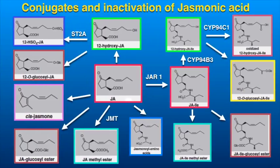Free jasmonic acid in the cytoplasm is conjugated to amino acids or glucose. An enzyme JAR1 was identified using JA-resistant mutants, which is responsible for forming JA-isoleucine conjugates. It was subsequently seen that the JA-isoleucine conjugate is the main signaling form of JA which binds to JA receptors. Jasmonic acid is also methylated by a methyl transferase to form methyl jasmonate, a volatile product that serves as a signaling molecule between different plants.